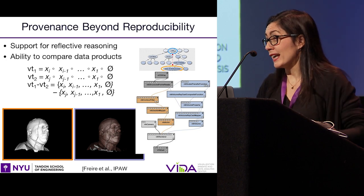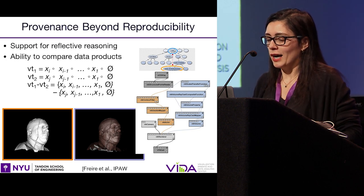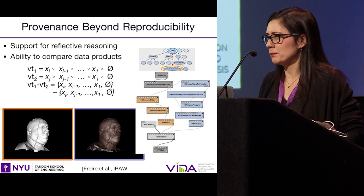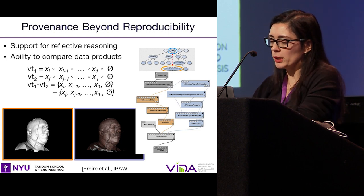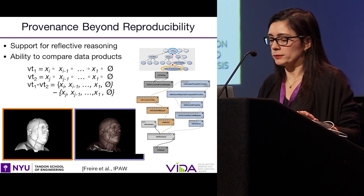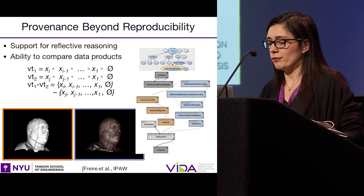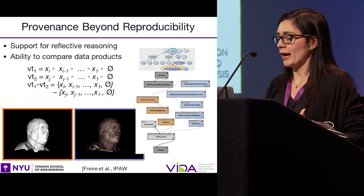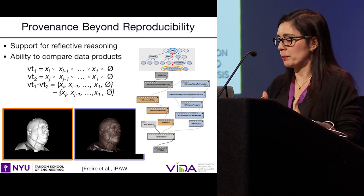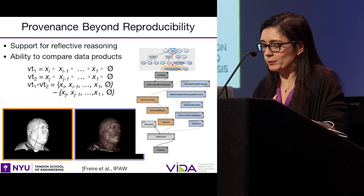You are able to more easily and accurately compare different results — like different models that have different F-measures. Here's a different example where I'm creating different visualizations for the Visible Human. I look at these images, they look slightly different, but what are the real differences behind them? By having that detailed exploratory provenance, I can look at the different workflows that generated those images. I can see that on the left side, in orange, this visualization is using isosurfaces and has a contour filter, whereas the one on the right side is using volume rendering — the right one has three orange blocks replaced by a blue box. So you can see the differences visually, and you can also see the difference in steps that led to the different visualizations.